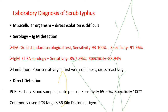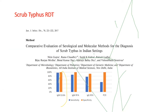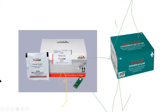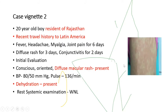Laboratory diagnosis of scrub typhus: since it is a rickettsial infection with intracellular organisms difficult to isolate in culture, serology with IgM detection is most commonly used. Platforms include immunofluorescence assay and IgM ELISA with good sensitivity and specificity. Direct detection by PCR can be done from the eschar or blood sample. Comparative evaluation shows IgM ELISA is highly sensitive; TrueNAT-based PCR detection and rapid IgM/IgG cards are also available.